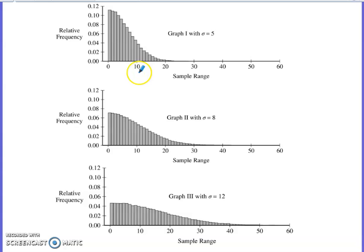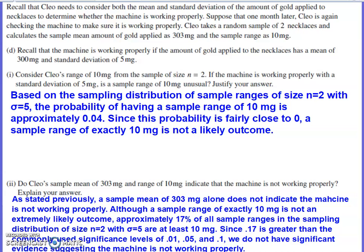And that is really close to 0.04. So what I said in part 1 of part D is I said that the probability of getting exactly that range is 0.04, and that is not extremely likely to occur. Probability is fairly close to 0, so that's not an extremely likely outcome for her sample range.